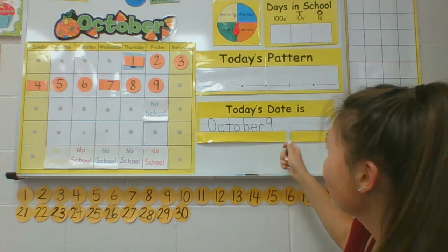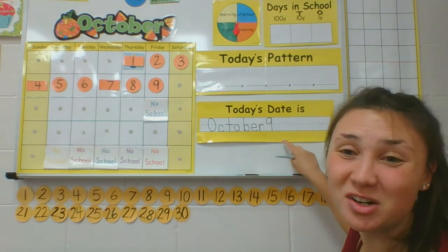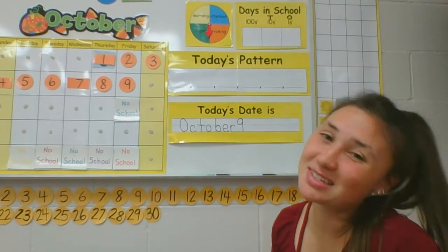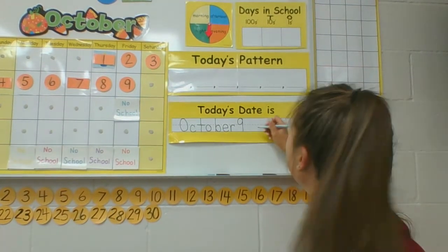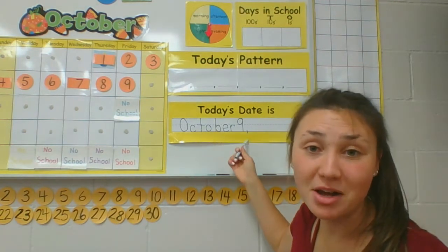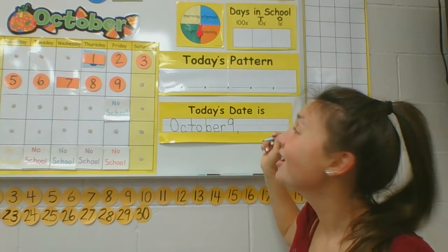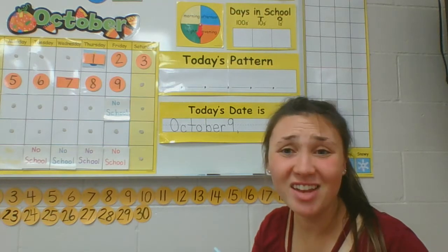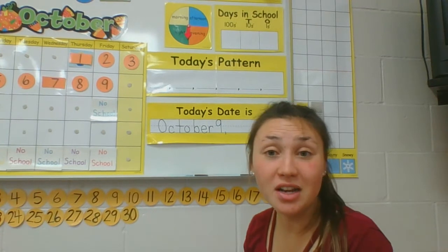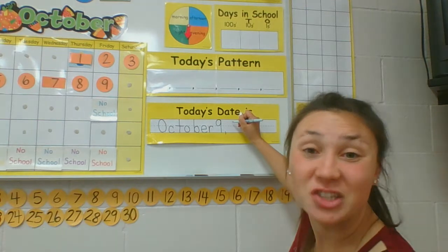And after we do that, what do we have to do? Your sideways smile — a comma. So you can make that now. We have our month, our day, our comma, and now finally our year. So what year are we in again? 2020. The first number in 2020 is a two.